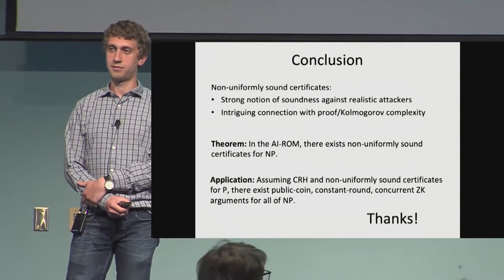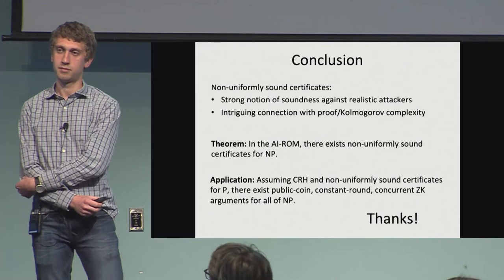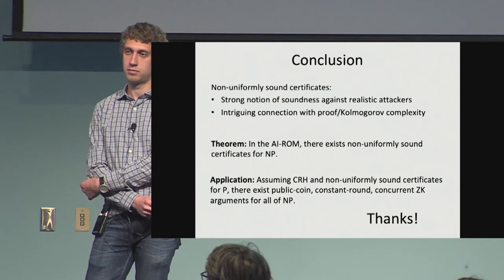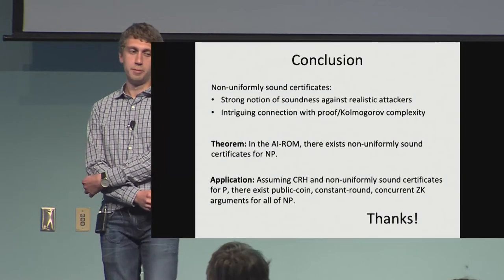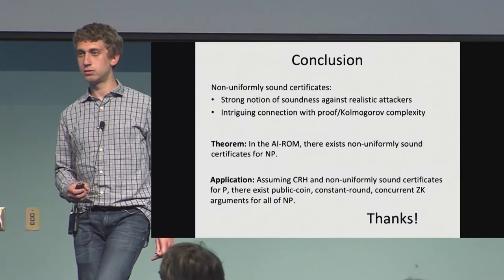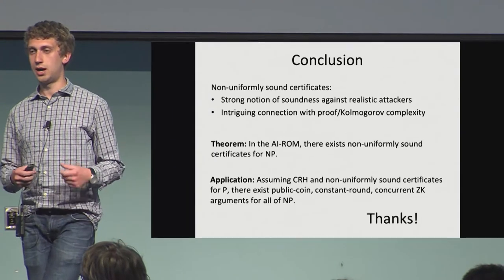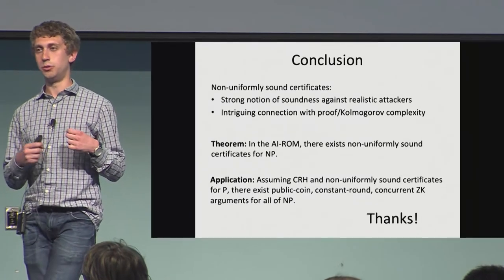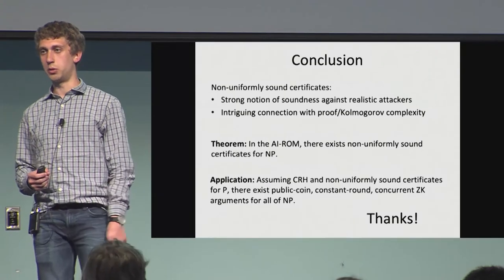Question: Why don't the techniques apply — or is it impossible to apply them — to logarithmic-round protocols like IOPs or other protocols where we use a Fiat-Shamir transform to make them non-interactive? Response: If you had a stronger soundness per round, there's no reason why this wouldn't work. But for arguments in general where you don't have these statistical properties, we don't have any evidence that this transformation would work. For proofs, it probably would.